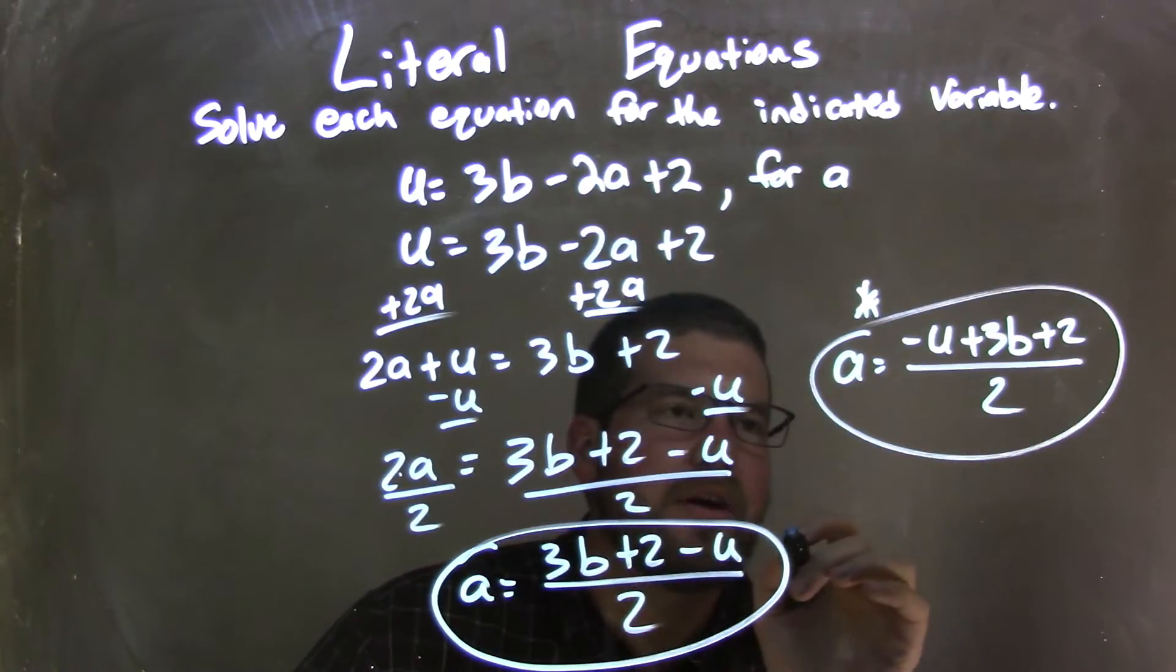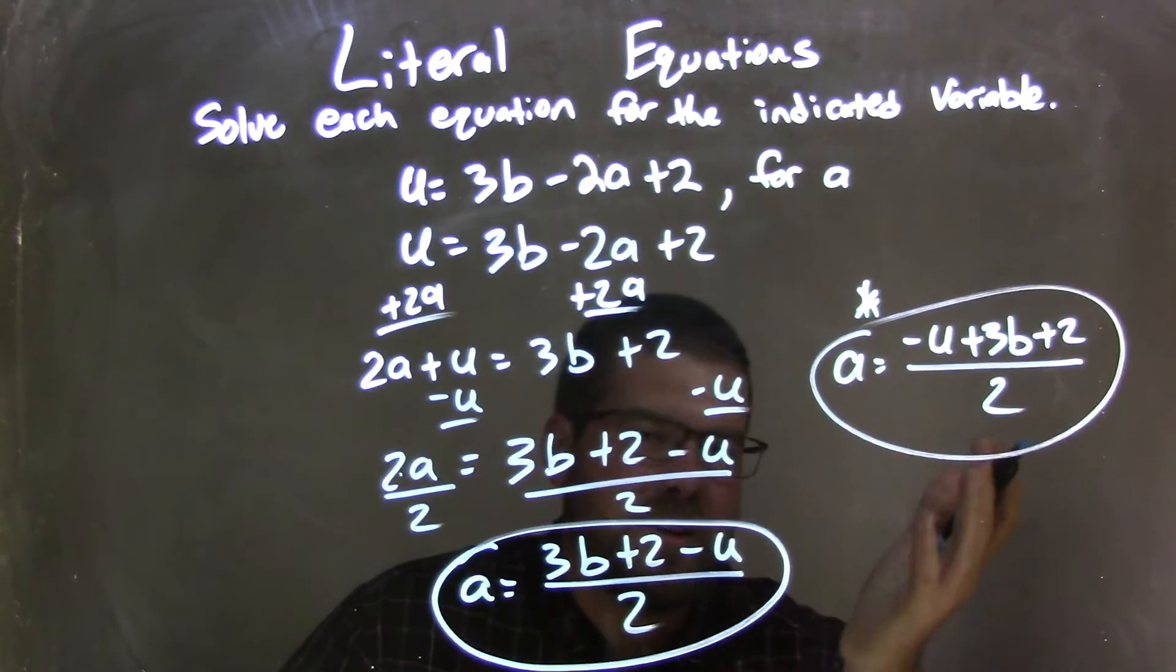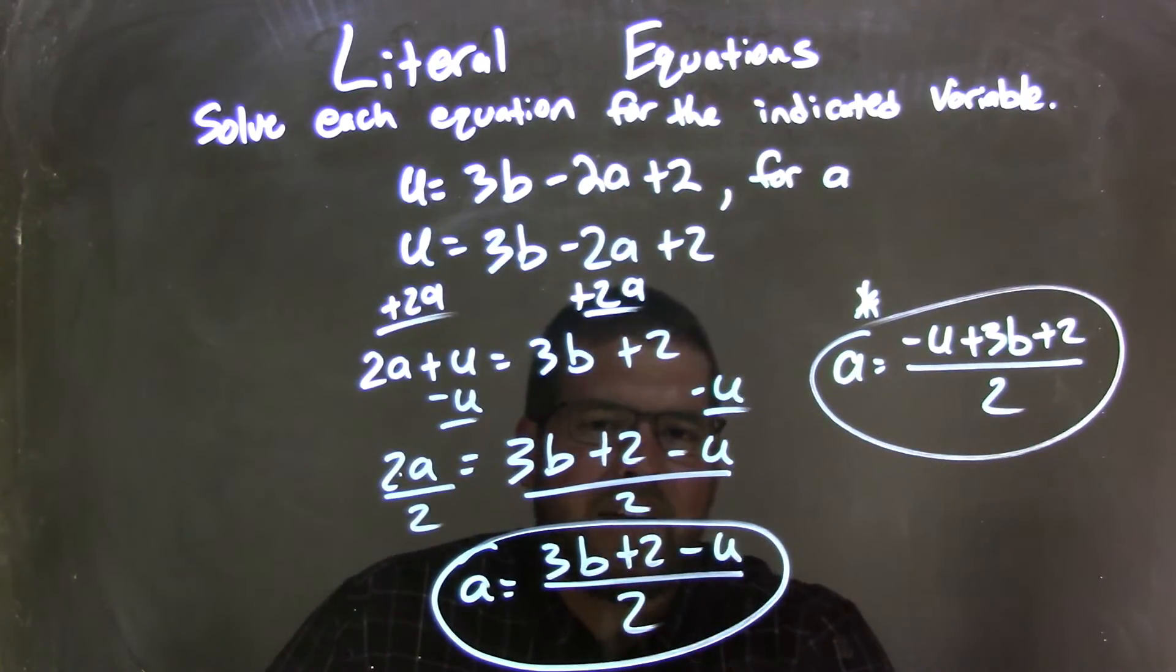Either way, the whole number is up there. We're divided by 2, and we're good. And so that is, or both of these, really the same thing, is our final answer.